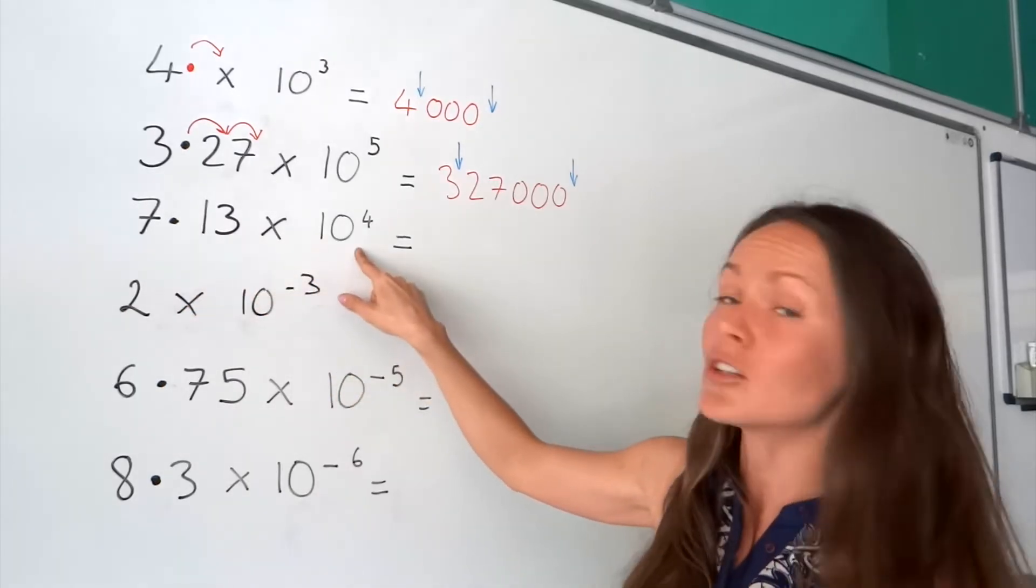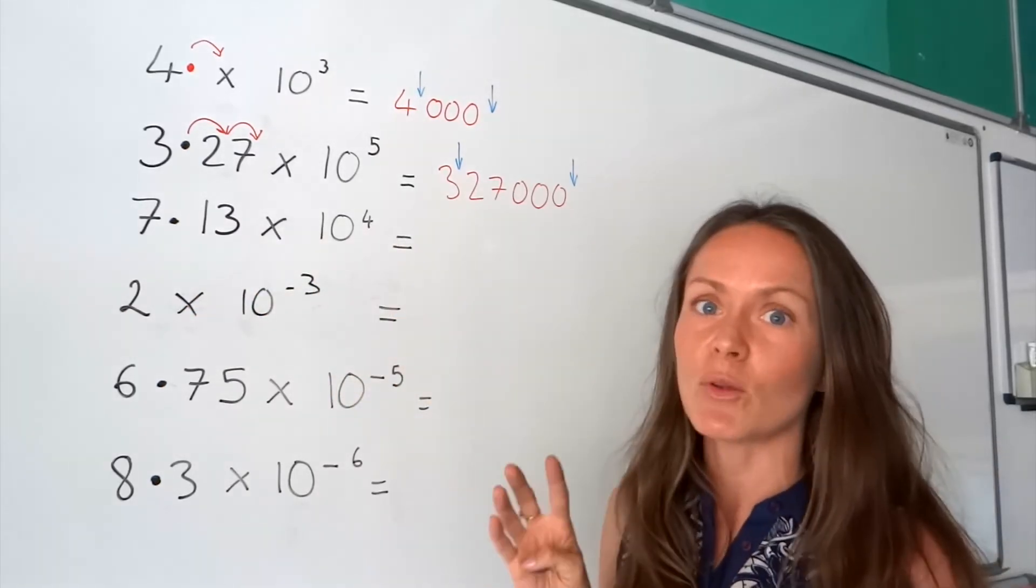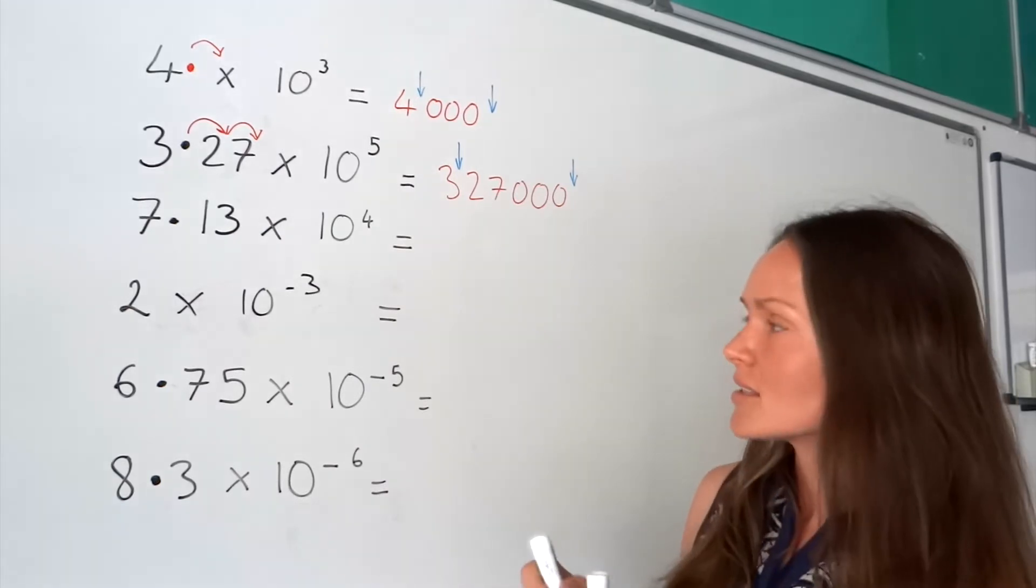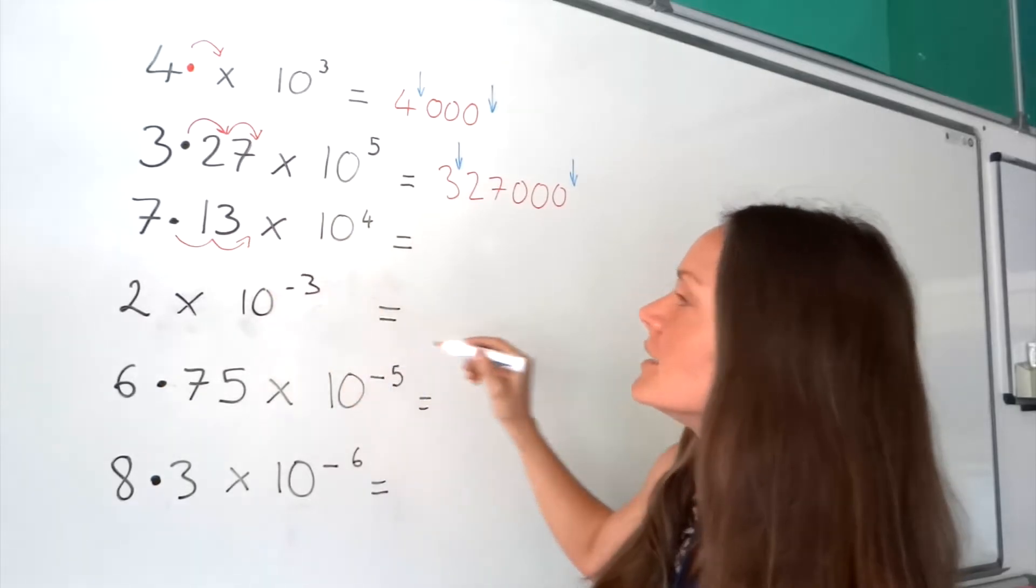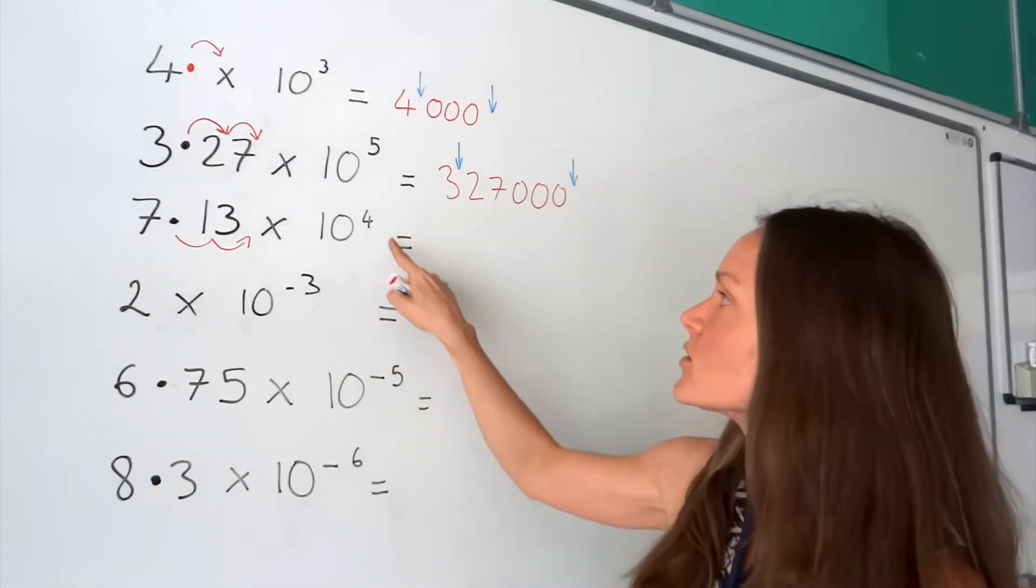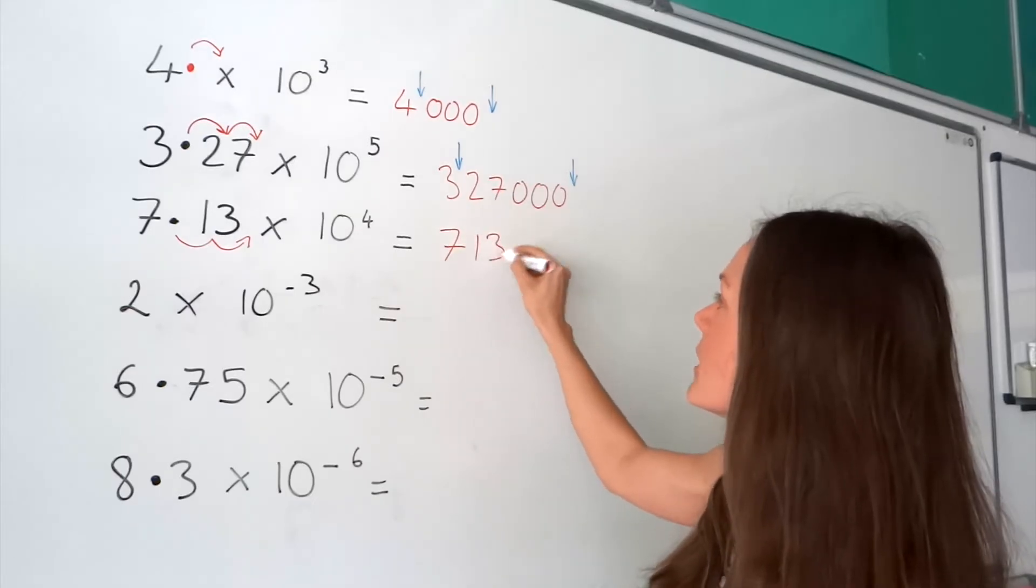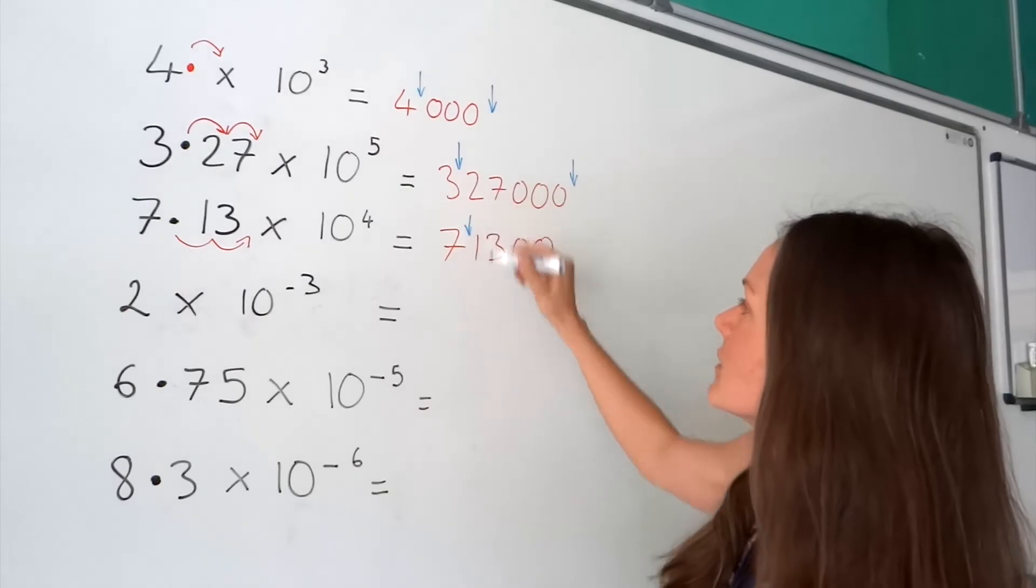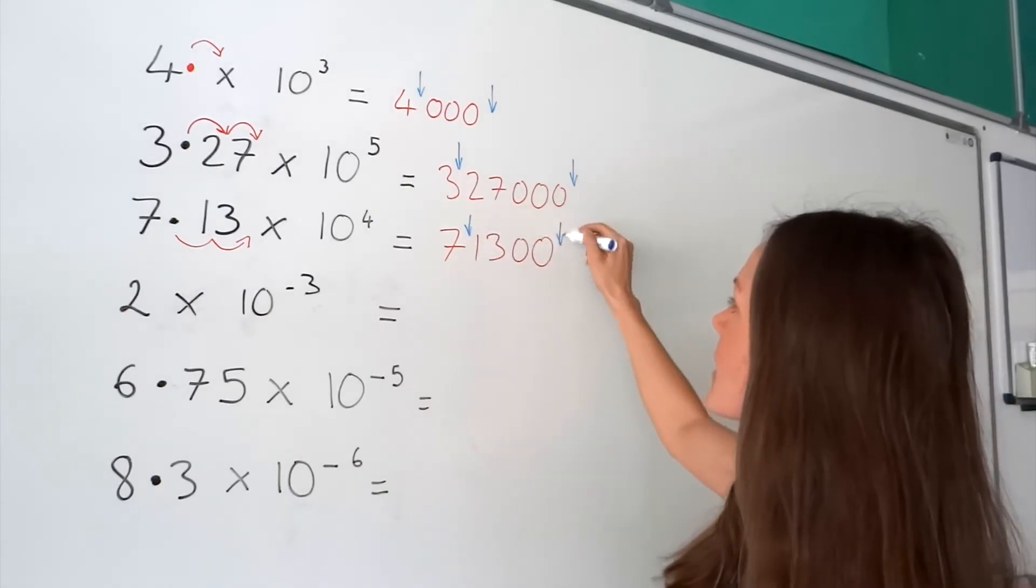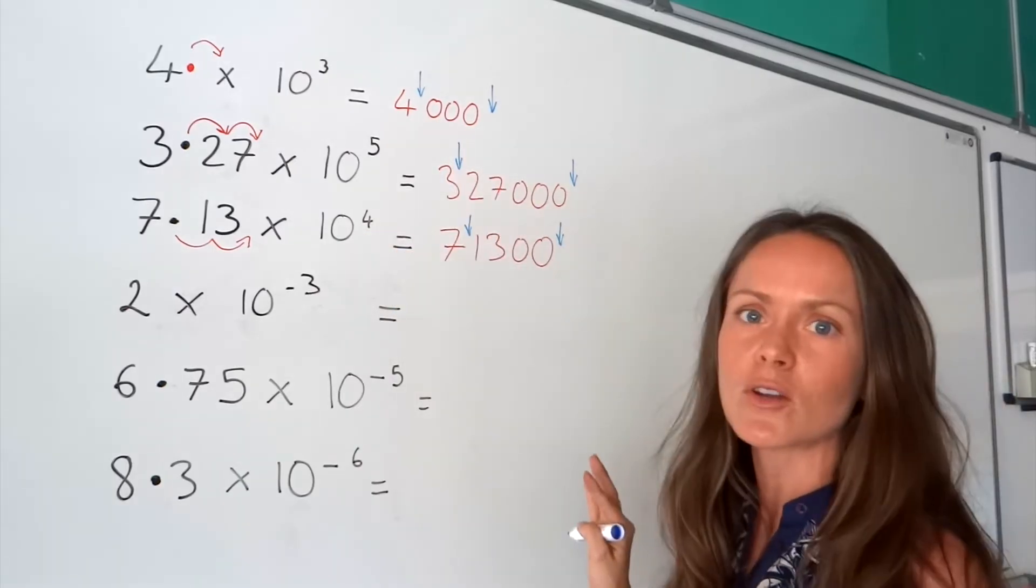Now, the last large number. The power is 4, so the decimal is going to move four places to the right. So again, there are two digits here, so 1, 2, but I need to add two more zeros so that the decimal has moved four places. So, 7, 1, 3, 0, 0. Let's just do a check. The decimal used to be there, now it's there, and we've got four digits in between. So those ones are good.